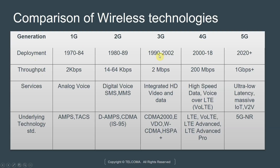3G came around in the 1990s and was prevalent until around 2002. Nominal throughputs we were seeing were about 2 megabits per second. The main services were integrated high-definition video and data, and the underlying technology standards were mostly CDMA-based — CDMA-2000, EVDO, Wideband CDMA, and HSPA+.